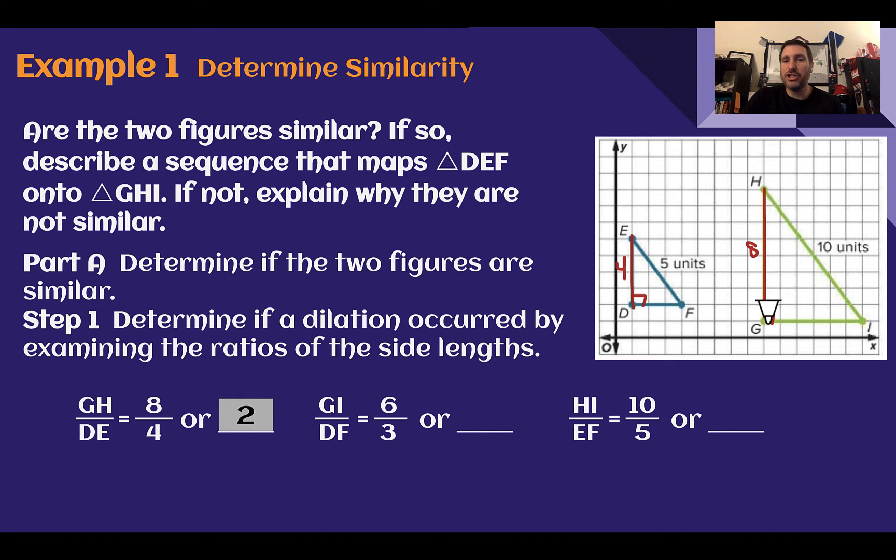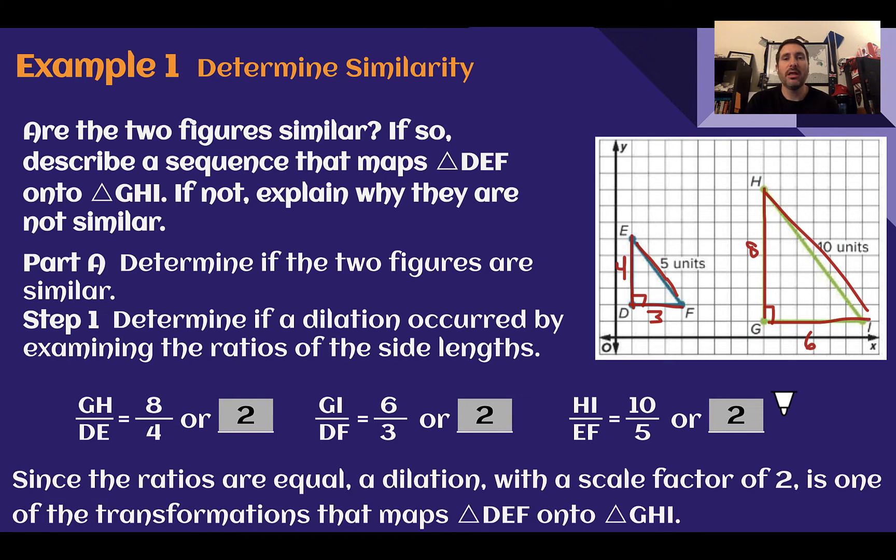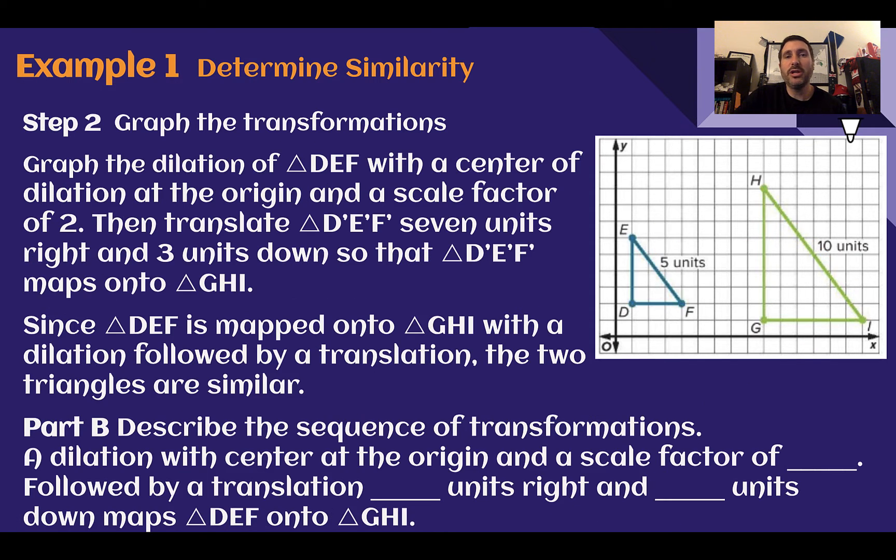This is 8 units tall, this is 4 units tall. So 8 over 4 would reduce to 2 over 1, or just 2. If I compare, GI was 6 units, DF is 3. Does that have the same ratio? Yes. 6 divided by 3 is 2. Finally, how about 10 and 5? Do they have the same ratio? That also has 2. Since they have the same scale factor, a dilation must be one of the transformations.